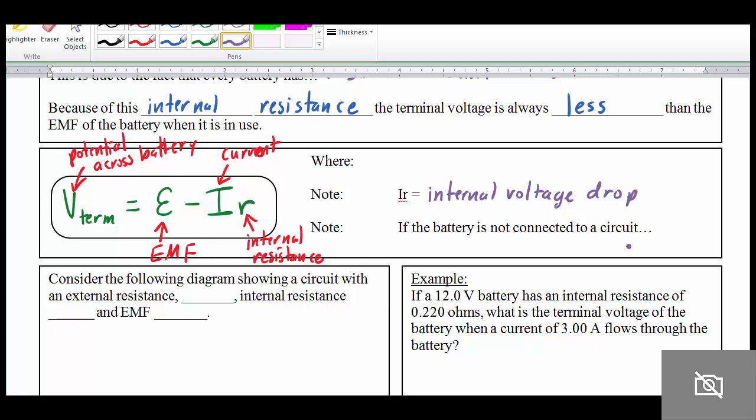And note that if the battery is not connected to a circuit, look at what happens to our formula here. If it's not connected to a circuit, our current drops to zero. And so zero times the resistance is zero. And in that case, our terminal voltage will equal the EMF. And that's only when there's no current flowing.